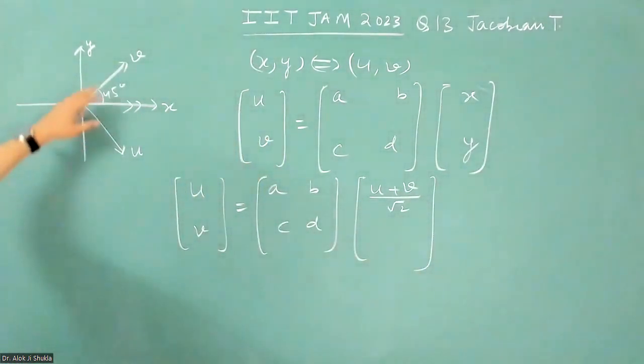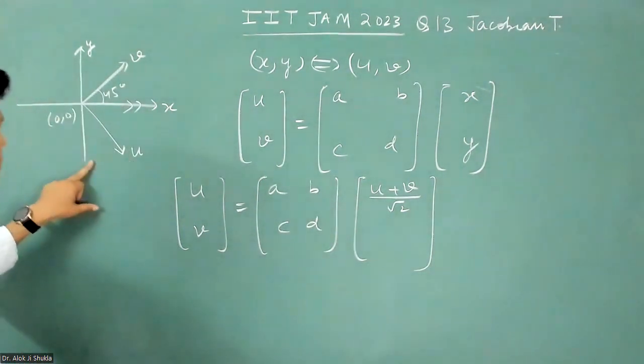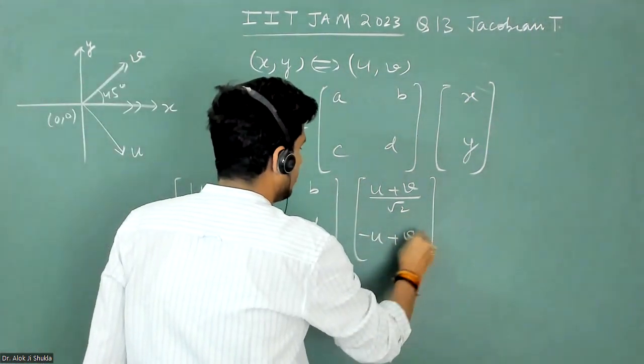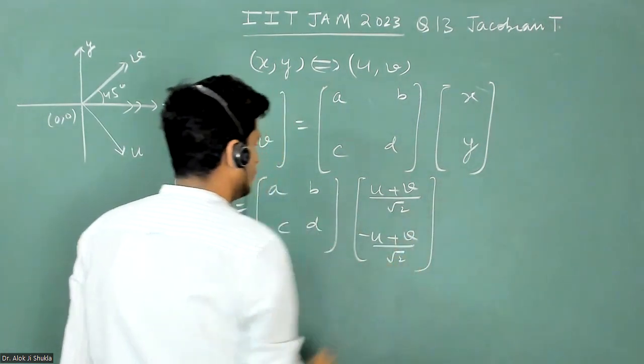And then for Y, it is also involving U and V. So U will be negative and V will be positive, so it will be minus U plus V by under root two.